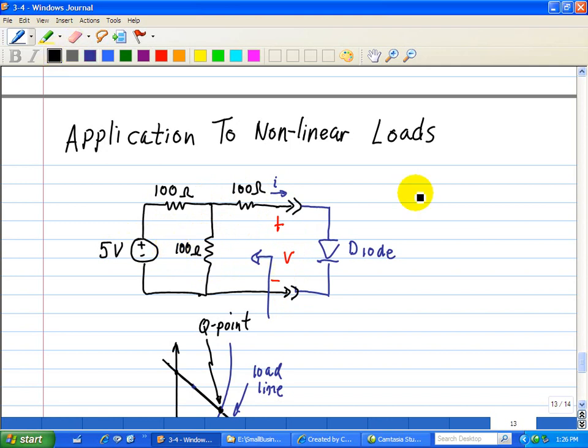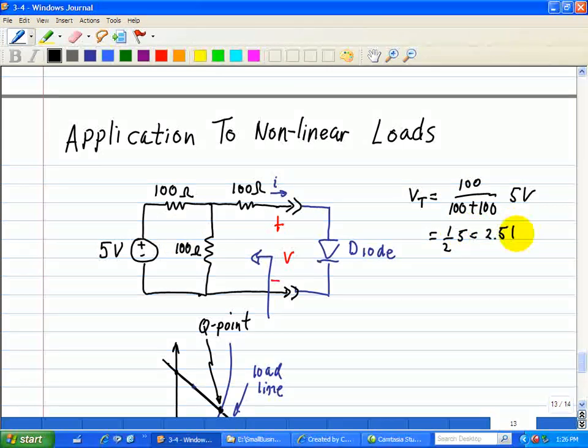Vt is just equal to 100 ohm resistor over the sum of the series connection, multiplied by this 5 volt source. Therefore, that's just 1 half times 5, or 2.5 volts.